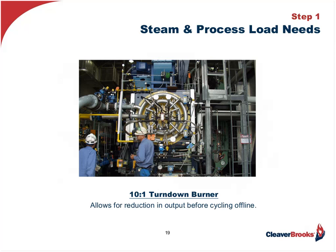The next thing I would specify is a 10-to-1 turndown burner. In the case of a 200,000-pound-an-hour boiler, a 10-to-1 burner will allow the boiler to reduce its output to 20,000 pounds an hour before cycling offline — you simply divide by 10. This will be critical for tracking the load during process variability and during those high-demand months when the plant is processing the seasonal vegetable pack, adding another 40,000 pounds an hour to the load. Along with the turndown, you want to make sure the boiler can respond to ramp rates. A typical ramp rate for an industrial water tube boiler is 20% of the MCR, or maximum continuous rating, per minute. Specify that the boiler is capable of 20% ramp rate as well as 10-to-1 turndown.